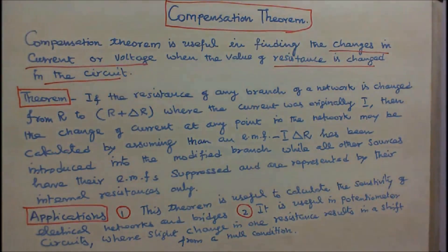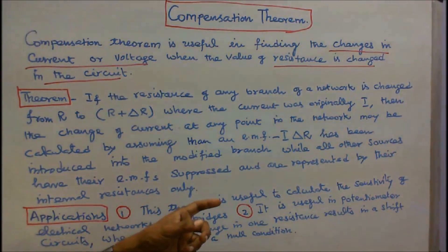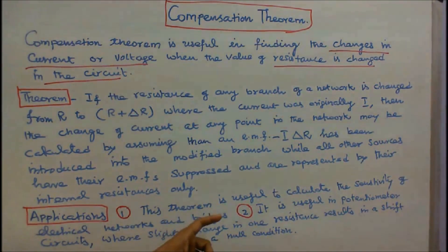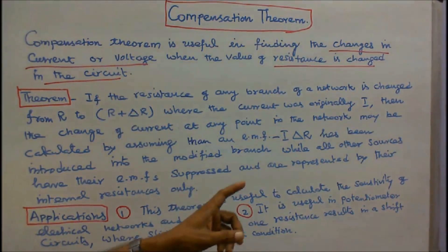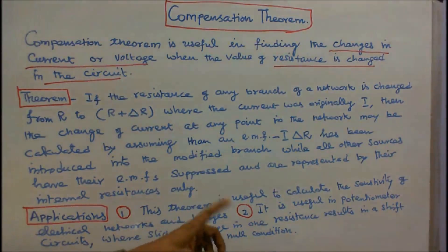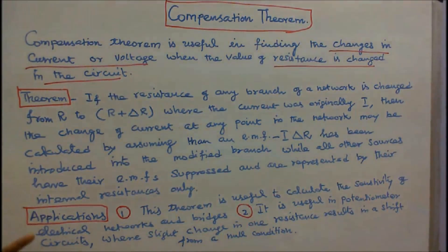Applications of compensation theorem: Number 1 - this theorem is useful to calculate the sensitivity of electrical networks and bridges. Number 2 - it is useful in potentiometer circuits where a slight change in one resistance results in a shift from a null condition.